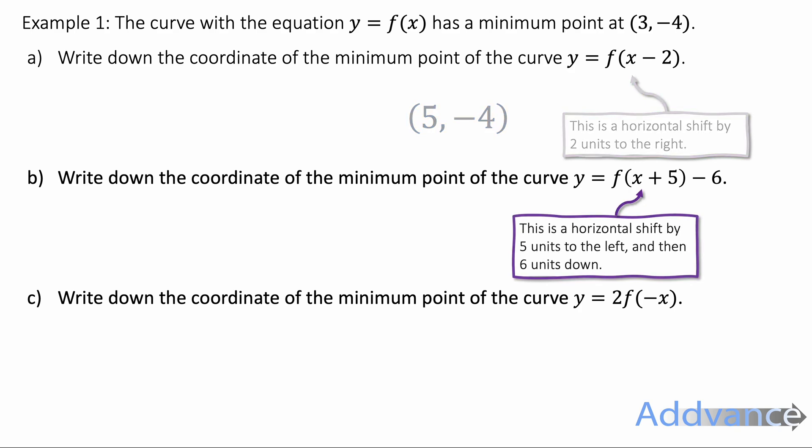The next one says write down the coordinate of the minimum point of the curve y equals f of x plus 5 minus 6. And here it's a horizontal shift to the left because of the x plus 5 in the brackets. The x coordinate goes down by 5 and the y coordinate goes down by 6, we get minus 2 minus 10. We've taken 5 off the x coordinate, we've taken 6 off the y coordinate.